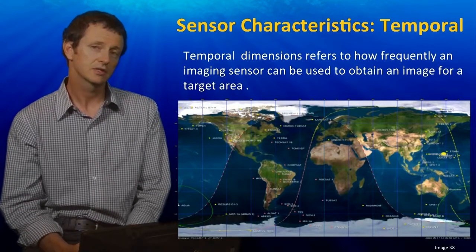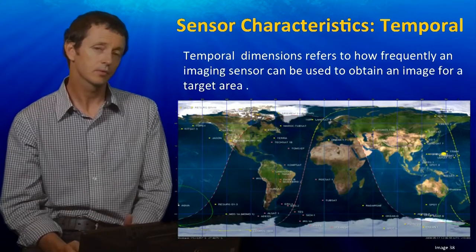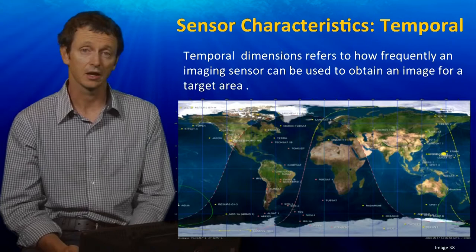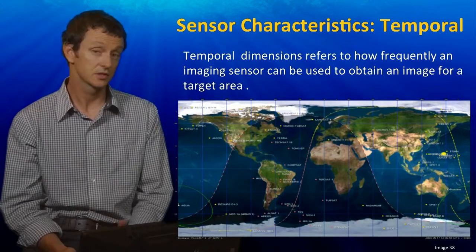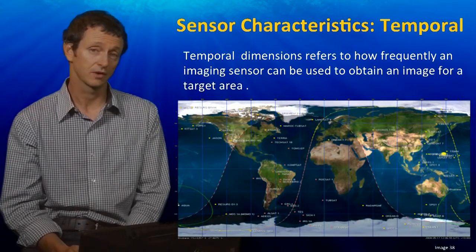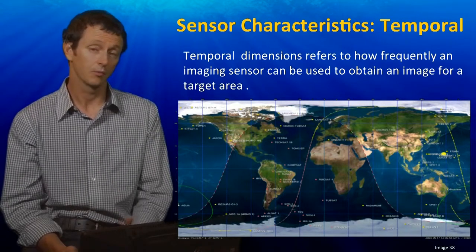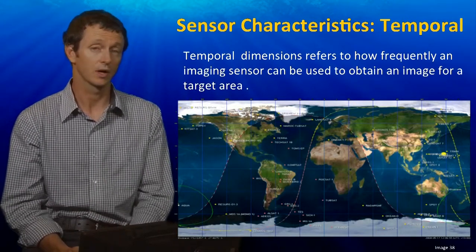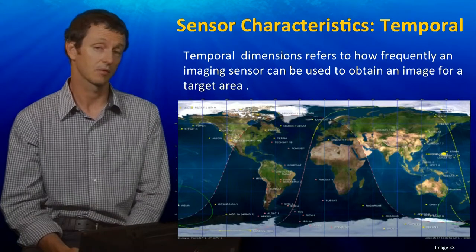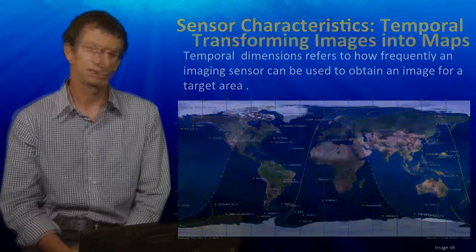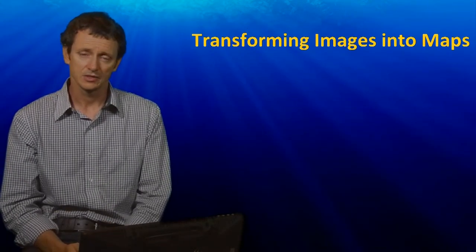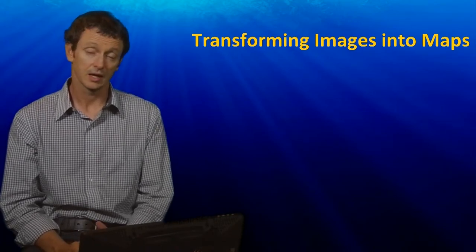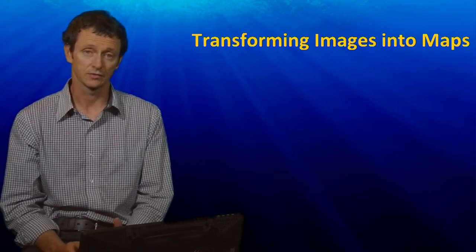The next characteristic is temporal. Temporal refers to how often the satellite or sensor comes back over a specific area, which is determined by the height the sensor is flying at or by the orbit of the satellite itself. Some satellites come over once every day, some satellites come over once every two weeks. I'm now going to hand over the presentation to Chris, who's going to take remotely sensed data and explain how that's transformed into maps.